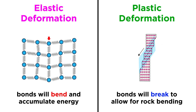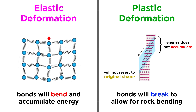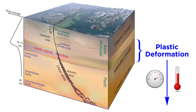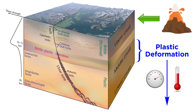In contrast with elastic deformation, plastic deformation occurs when atomic bonds are broken under stress. Under perfect plastic deformation, materials do not accumulate energy as they're stressed, because the energy is released when the atomic bonds are broken. Materials that deform plastically do not revert to their original shape once the stress is removed. Plastic deformation occurs mainly under the enormous pressures and temperatures of the lower crust and mantle, though it can occur closer to the surface if either the temperature is high enough or the material is weak enough — for instance, beneath volcanoes.